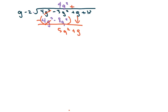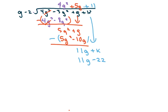Bring down the G. So, the next one is going to be plus 5G. And you multiply, just to cancel this first term. You get 5G squared minus 10G. And then you subtract, and that gives you 11G. Bring down your K. And then, the next one is going to be plus 11. So, that's going to be 11G minus 22. And then go ahead and subtract. And that gives you K minus 22.